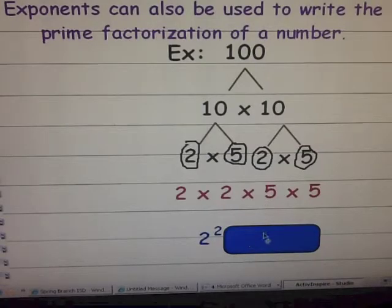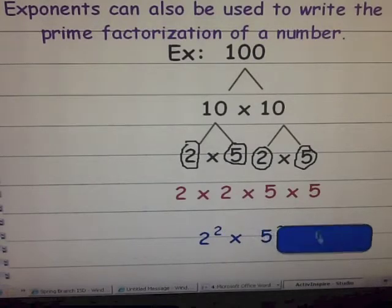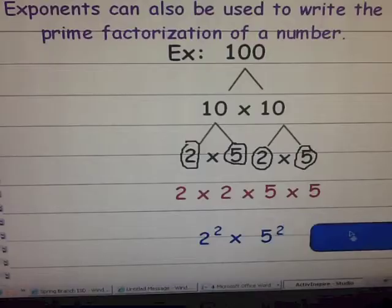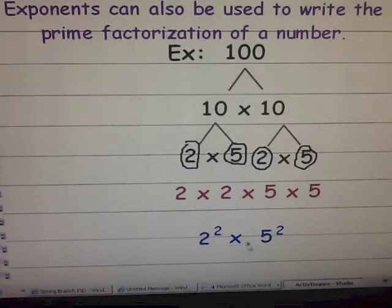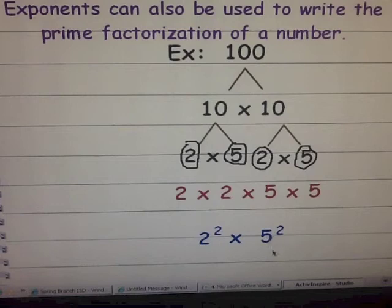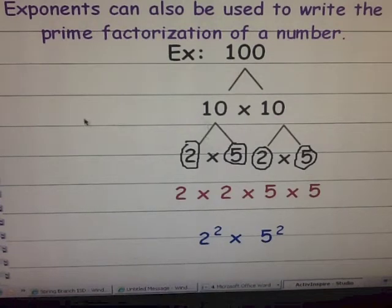Our next factor is five. How many fives do you see? There are two as well — that is your exponent. So we could say that the prime factorization of a hundred is two squared times five squared, or two to the second power times five to the second power. It's a lot easier to write than two times two times five times five.